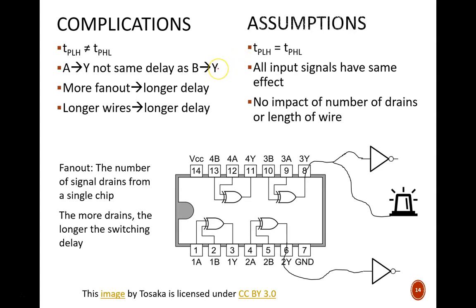Second, all inputs are not created equal. Sometimes a gate responds slower to changes in one input than another. We will assume that all inputs have the same effect. Third, the more fan-out of a signal, the longer the delay. Fan-out is illustrated in this image below. It is the number of signal drains from a single chip. This example has two gates sending signals to three destinations, which could be other gates or output lamps. If we had more and more destination signals, the propagation delay would increase for all of these gates.